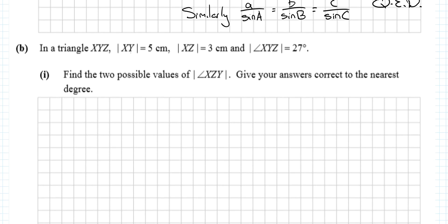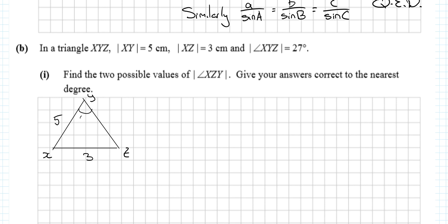Now for the next part: in a triangle XYZ, let me do a quick sketch — not accurate at all. XY is 5, XZ is 3, and angle XYZ is 27 degrees.